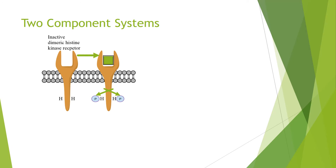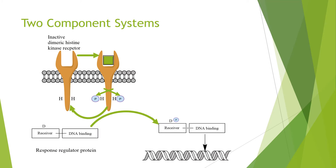Cytokinin signaling uses a two-component system, which is seen often in bacterial environment sensing. Here we have a classic example with an inactive dimeric histidine kinase receptor. It becomes activated by its ligand, causing transphosphorylation of a histidine residue — meaning one monomer phosphorylates the other. This phosphate group on histidine is then transferred to a receiver domain on a response regulator protein on an aspartate residue.